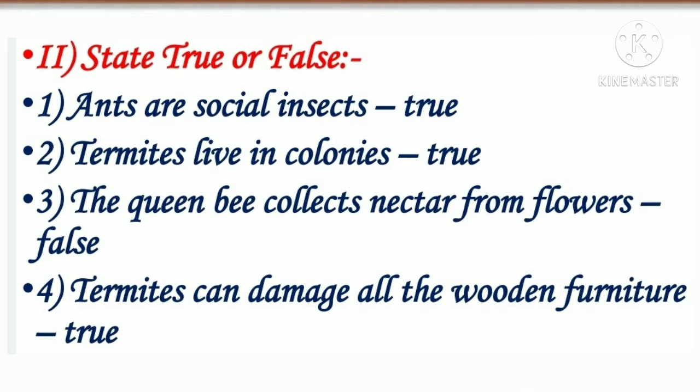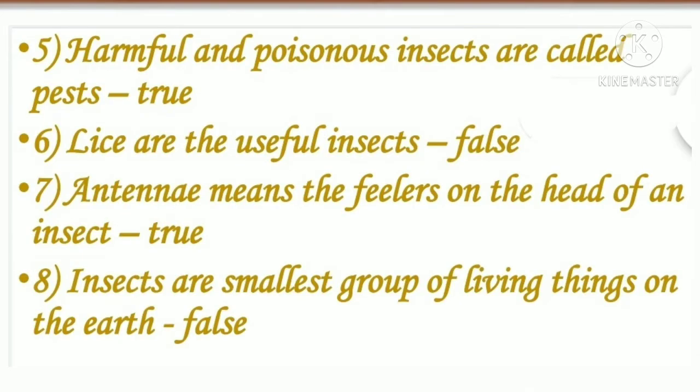Second question: state true or false. First one: ants are social insects. True. Second one: termites live in colonies. True. Third one: the queen bee collects nectar from flowers. False. Fourth one: termites can damage all the wooden furniture. True. Fifth one: harmful and poisonous insects are called pests. True.